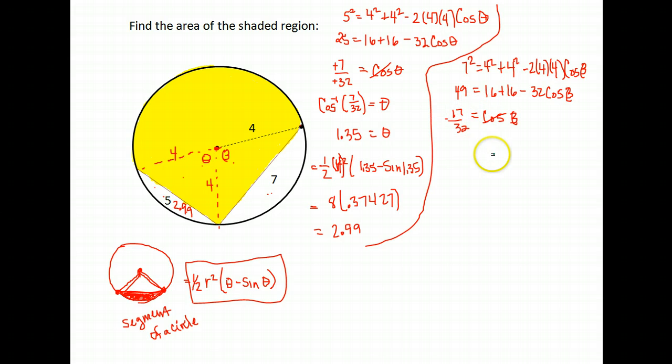I'm going to do the inverse cosine of both sides to get my beta, or the arc cosine if you prefer to call it that. People use both.